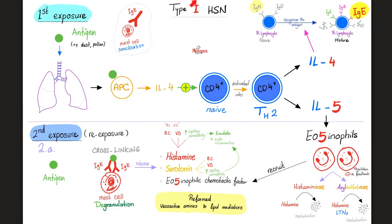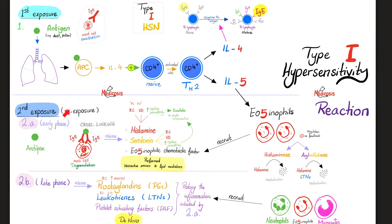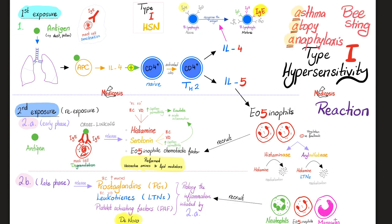Recalling the previous video on type 1 hypersensitivity: there's a first exposure and a second exposure. The second exposure has an early phase with pre-formed vasoactive substances, and a late phase where de novo, newly synthesized immune mediators are produced on demand. Examples of type 1 include asthma, atopy, anaphylaxis, and bee stings.